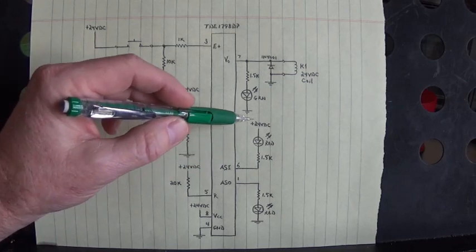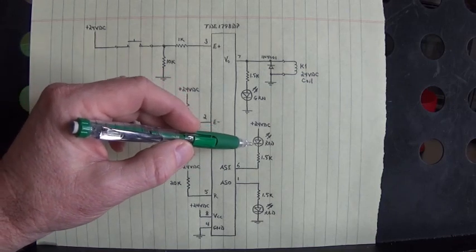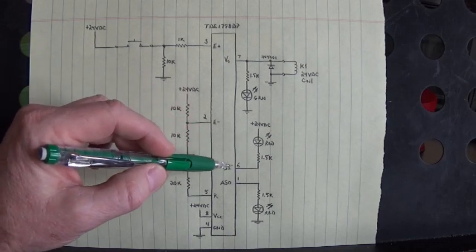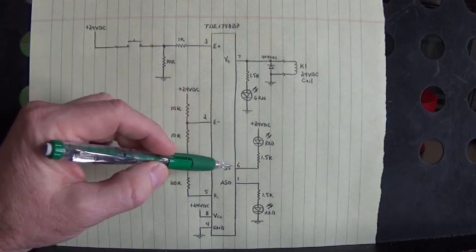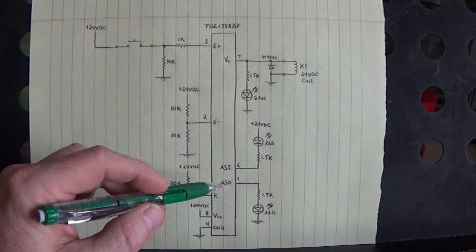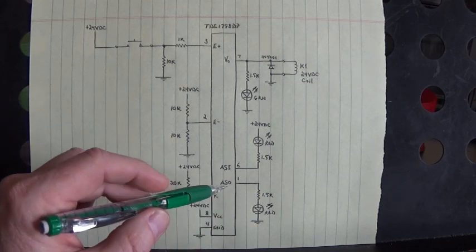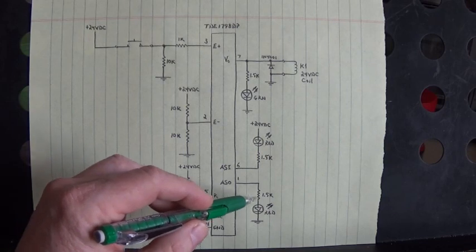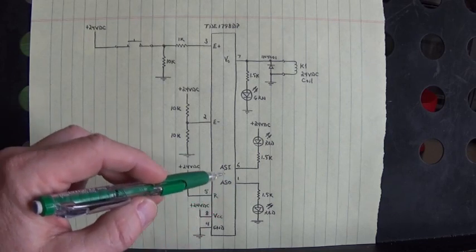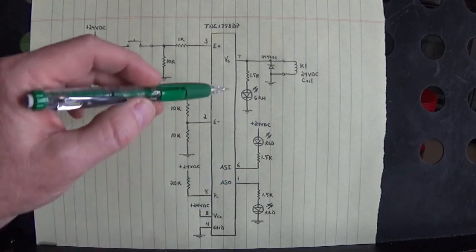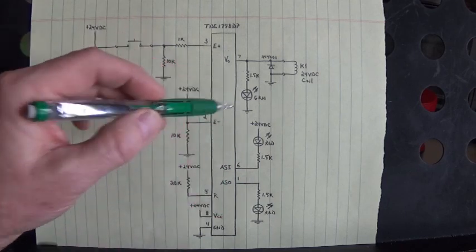When we're sinking to ground, the positive is up here and the cathode is right here. When we're sourcing to ground, ground is down here on the cathode side and the anode side is connected to pin 1. We have current limiting resistors on all three of those LEDs.